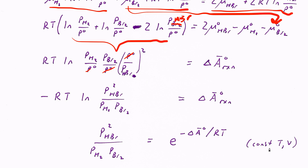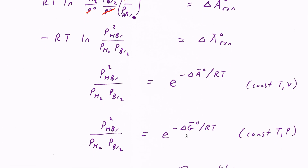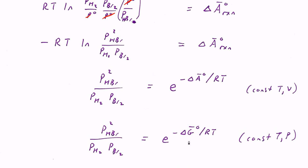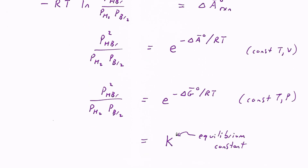At constant T and V this is a new version of our equilibrium condition: the system is at equilibrium when P(HBr)²/(P(H₂)·P(Br₂)) equals e^(−ΔA/RT). If we had done this at constant T and P instead, the only difference would be using the Gibbs free energy rather than Helmholtz. Calculating e^(−ΔG/RT) and calling that value K — the equilibrium constant — we find that this ratio of pressures equals K.